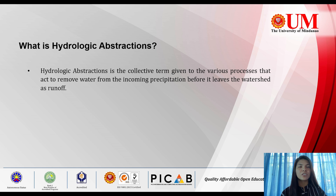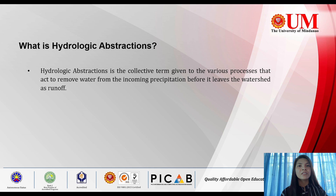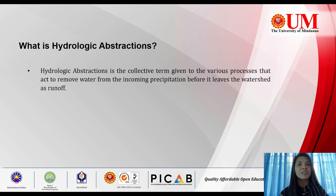Hydrologic obstructions is the collective term given to the various processes that act to remove water from the incoming precipitation before it leaves the watershed as runoff. These processes are evaporation, transpiration, interception, infiltration, depression storage, and detention storage. But for now, we only need to focus on evaporation, transpiration, interception, and depression storage, since these are the only processes assigned to be discussed.